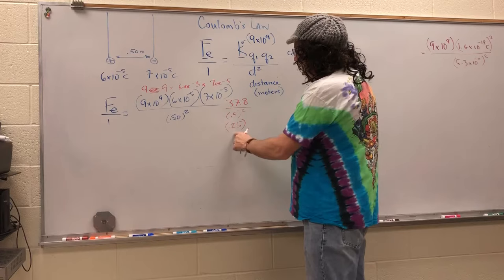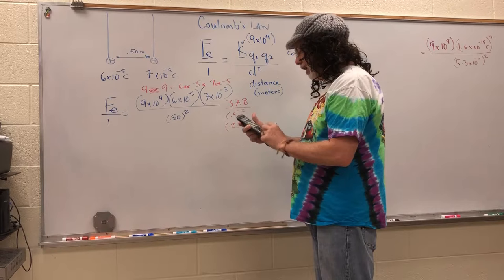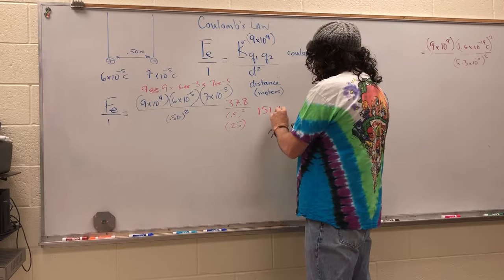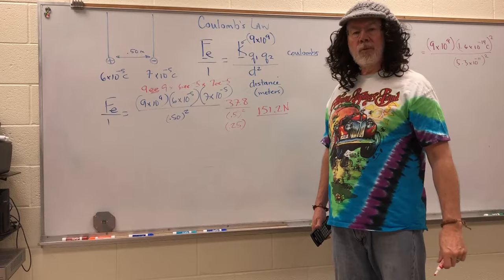If you're not sure, run it on your calculator. So we've got 37.8 divided by 0.25 equals 151.2. The units are going to be in newtons.